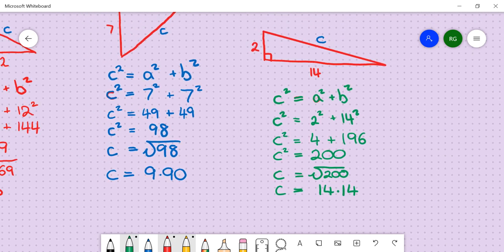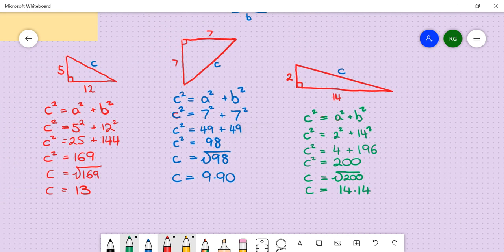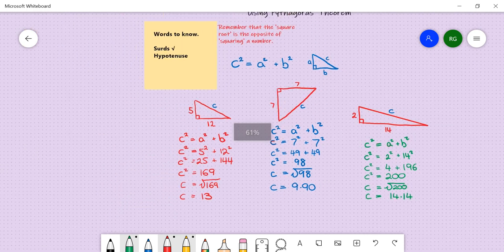And we find that it's 14.14 when rounded to two decimal places. Which is, as we thought, just a little bit bigger than 14. So there's just a few examples.